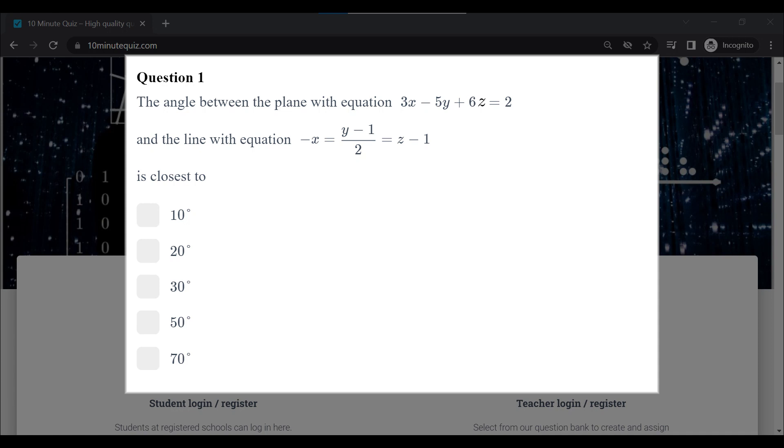We're going to look at how to find the angle between a line and a plane. The trick to this is to use the normal vector to the plane.